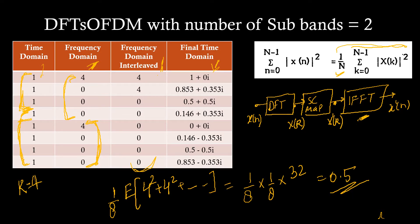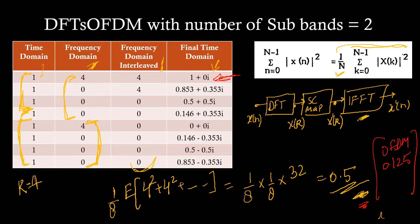Now we can see that for DFTS OFDM the mean power is more — 0.5 — whereas for OFDM the mean power was 0.125. Because the average power is more, the PAPR is lesser. This example gives an intuition, verified mathematically, of exactly how DFTS OFDM helps us reduce the PAPR.